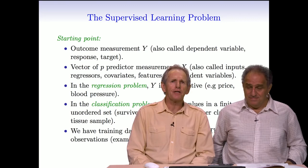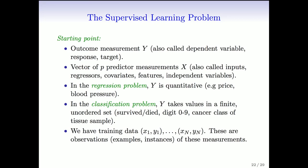Now we're going to talk about the supervised learning problem and set down a little bit of notation. We'll have an outcome measurement, y, which goes by various names: dependent variable, response, or target. And then we'll have a vector of p-predictor measurements, which we usually call x. They go by the name inputs, regressors, covariates, features, or independent variables.